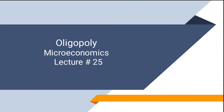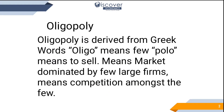Hello viewers, this is Kulshum Ahmed. Today we are going to learn about oligopoly, this is our microeconomics topic. Oligopoly is derived from Greek words: oligo means few and polo means to sell, meaning a market dominated by few large firms — competition amongst the few.